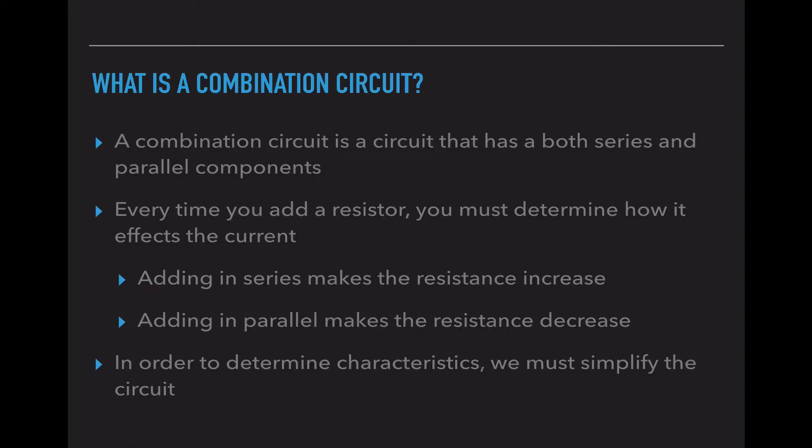First you need to know that a combination circuit is a circuit that has both series and parallel components. Every time that we add a resistor, we have to be careful and determine how it affects the current. If we add a resistor in series, it makes the total resistance increase. If we add a resistor in parallel, it makes the total resistance decrease.